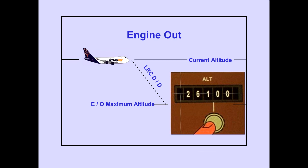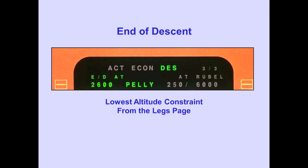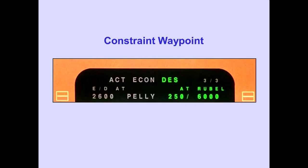Now let's discuss VNAV descent. The descent page enables the pilot to revise and evaluate the descent profile. The end of descent point is displayed for the lowest altitude constraint from the legs page, displayed to the left of the next constraint waypoint. The airspeed and altitude constraints are displayed — in this example, at Rubel, the constraints are 250 knots and 6,000 feet.